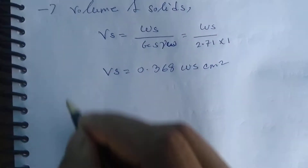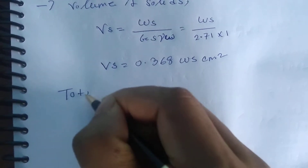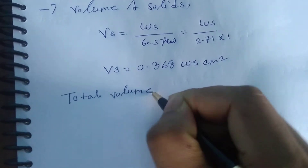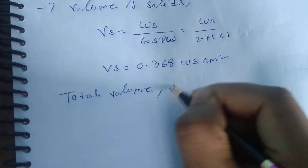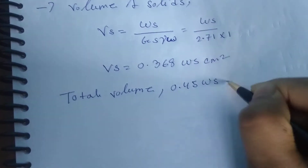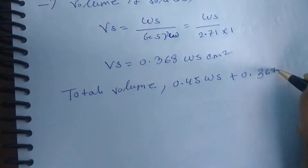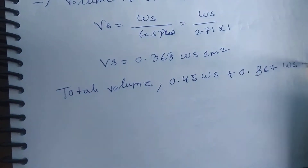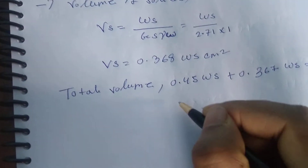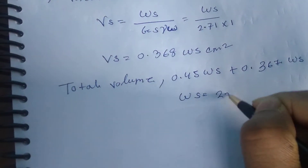The total volume is 0.45 WS plus 0.367 WS plus 0.23 WS equal to A.